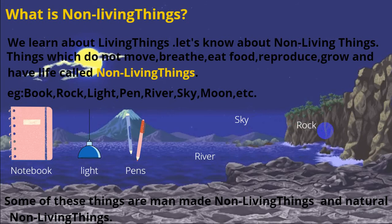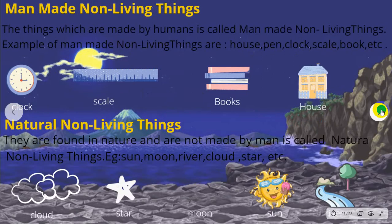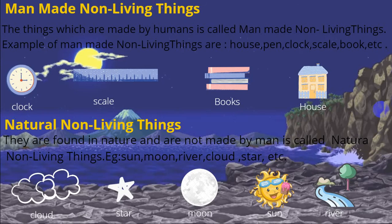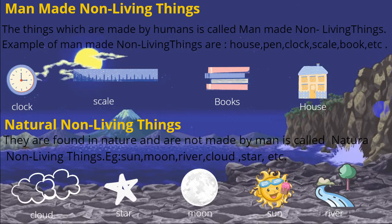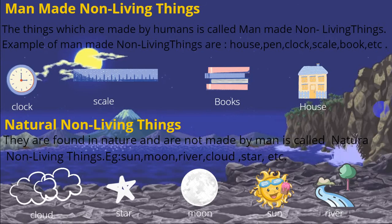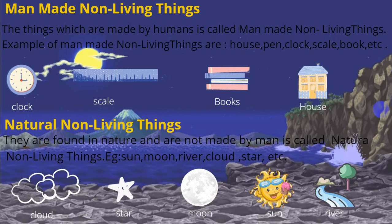Some non-living things are man-made and some are natural. Man-made non-living things are things which are made by humans — examples include house, pin, clock, scale, and book. Manish le banae ko haru chee man made non living things banin cha.